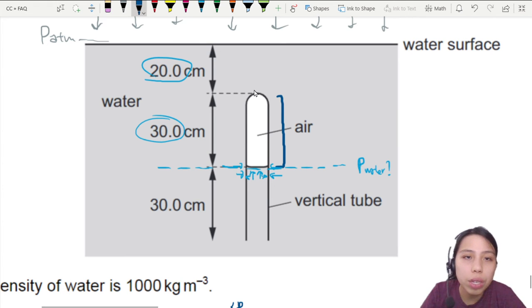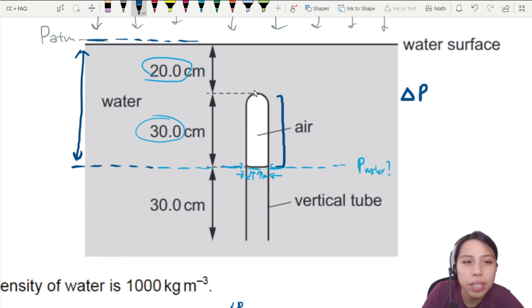So the pressure inside the air, if I want to find the change in pressure from surface up there all the way down to this level, this change in pressure is due to a water column that can be calculated with rho g times delta h.